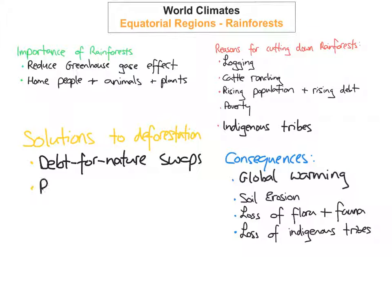The second solution would be to reduce demand for wood. This would be up to the Western world — to stop demanding hardwoods such as mahogany for making doors, tables, and floors. If demand wasn't as strong, there would be less incentive to chop down the rainforest, and this could save thousands of hectares each year.